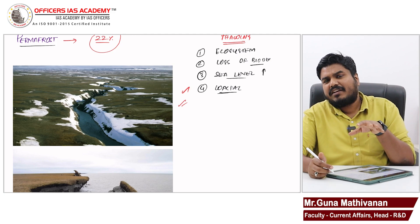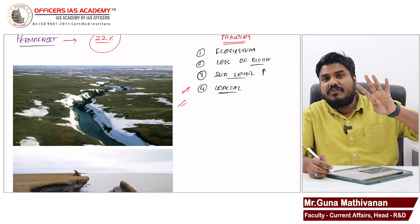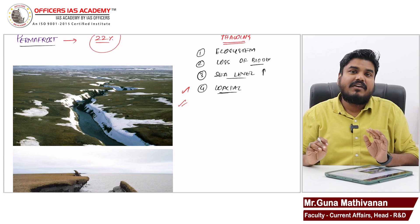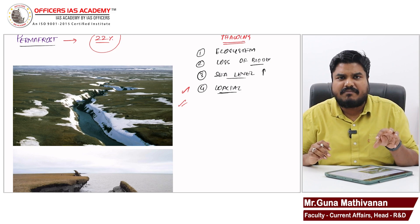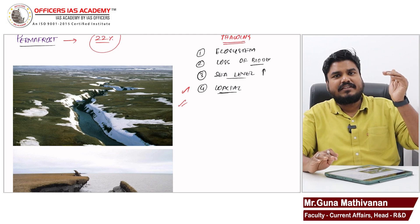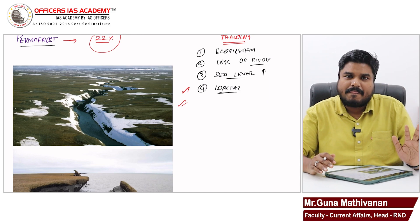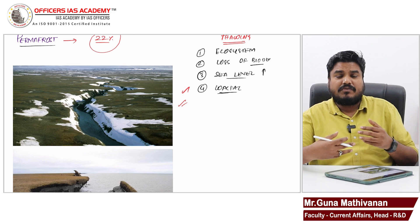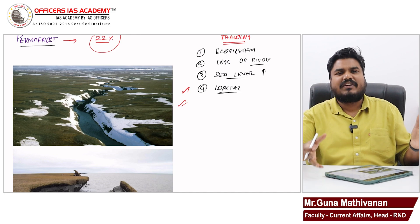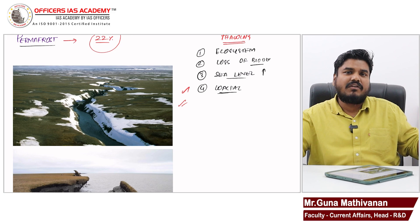Have you heard about Arctic amplification? The Arctic region is getting heated four times at a higher rate compared to other parts of the world — that is called Arctic amplification. I will explain Arctic amplification in another video. Just understand that the Arctic region is getting heated up at a faster pace, and that's what we have to know. The Arctic region, which has a huge amount of ice, is witnessing huge breakdown of ice and huge permafrost thawing.